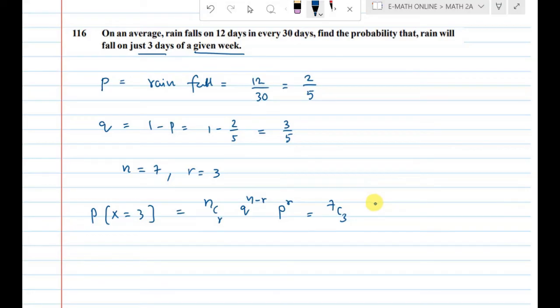And q, which is the probability of no rain, equals 3 by 5. For the remaining days, n minus r equals 4 days out of 7.